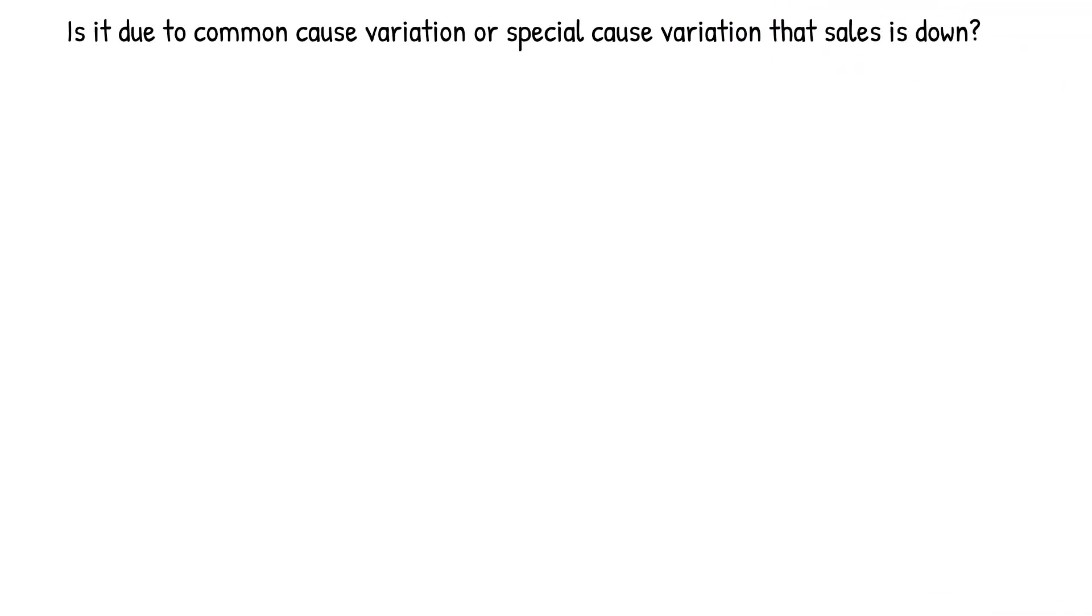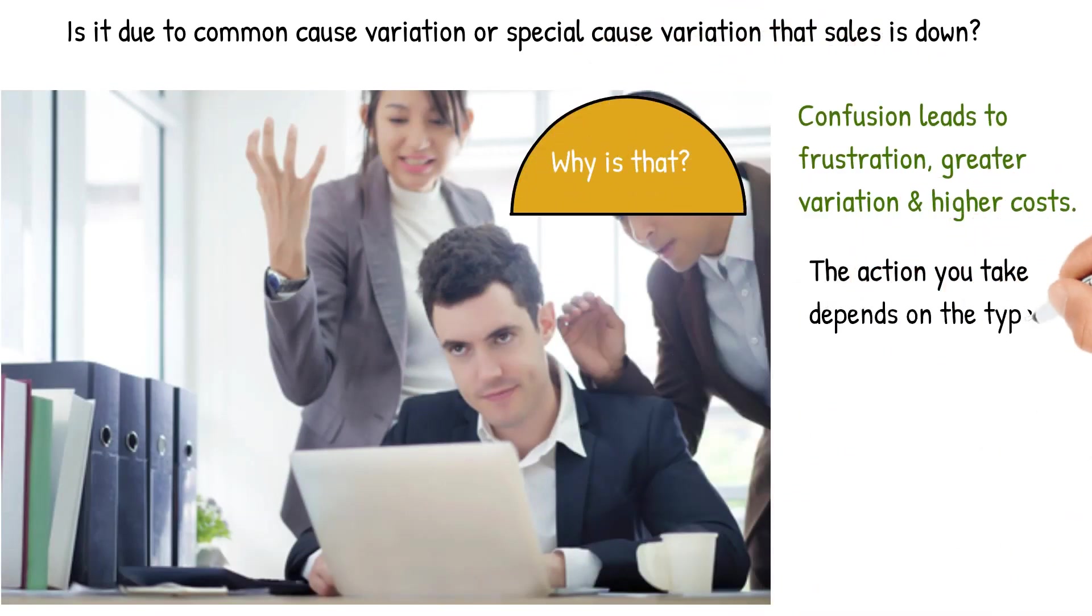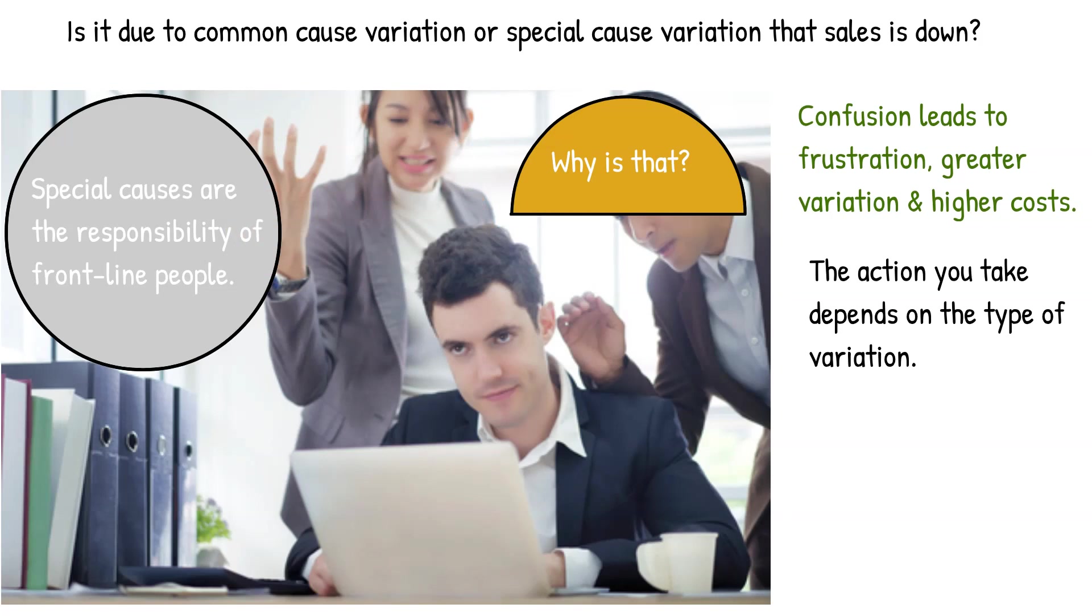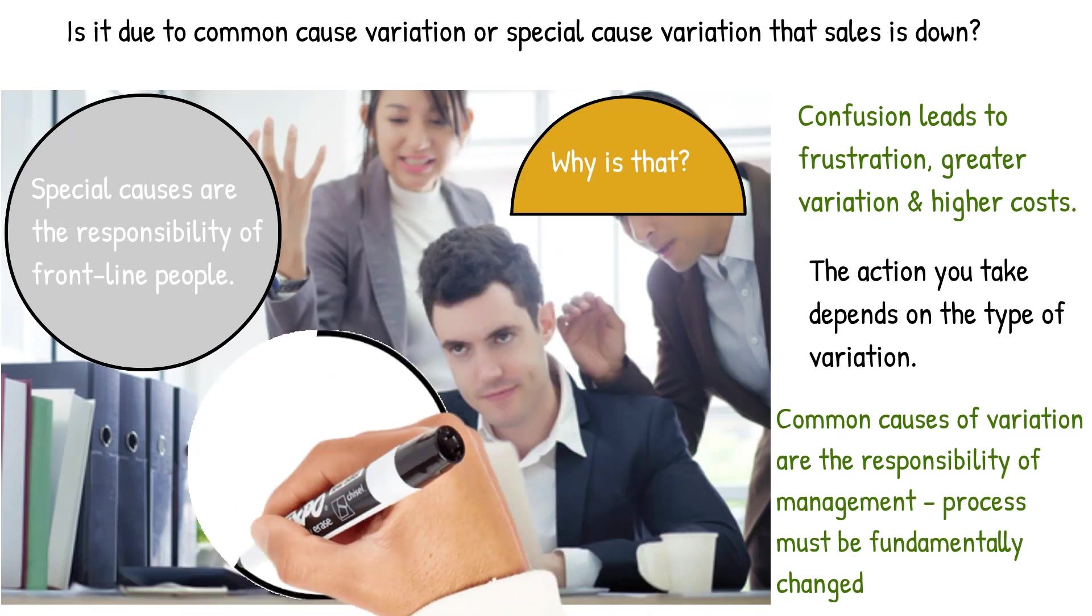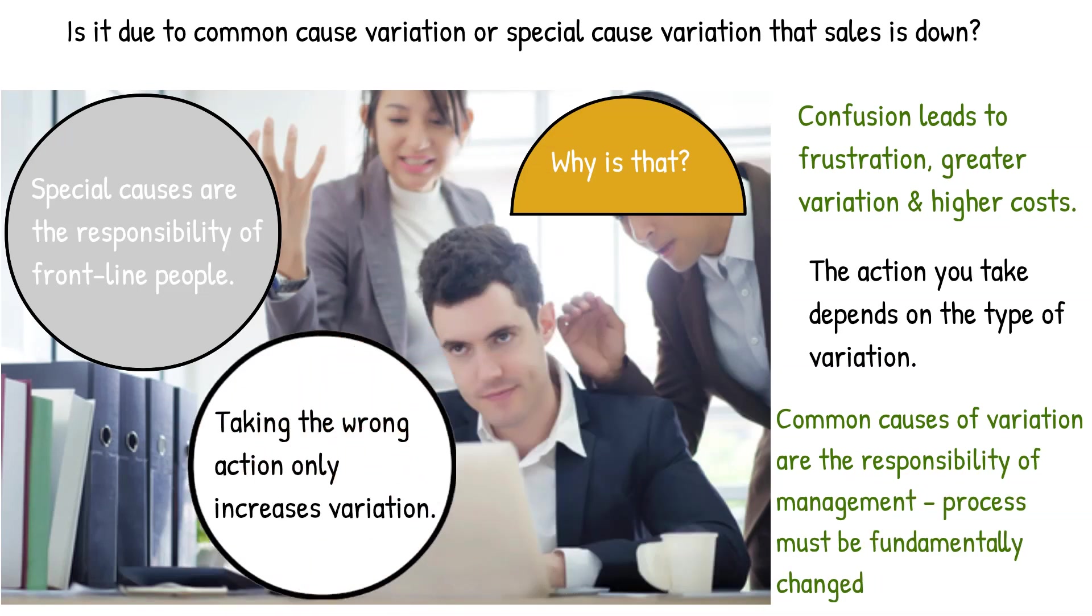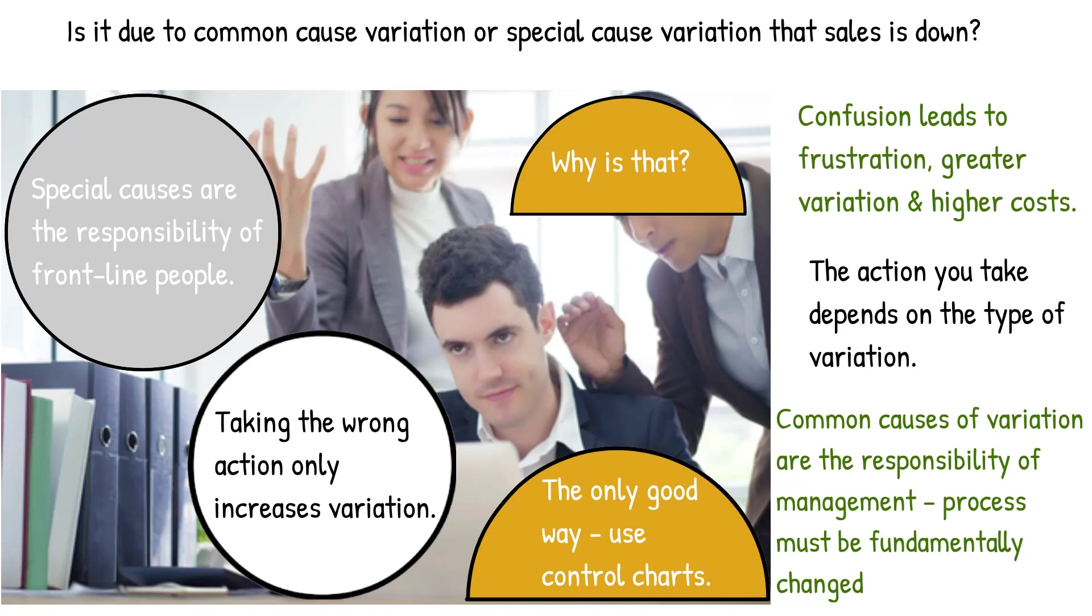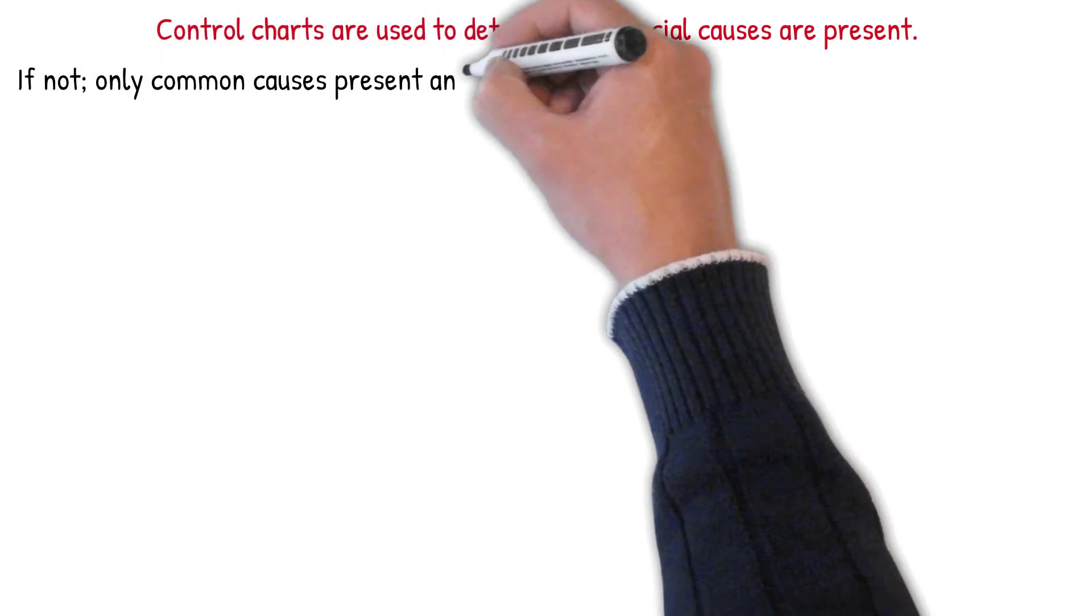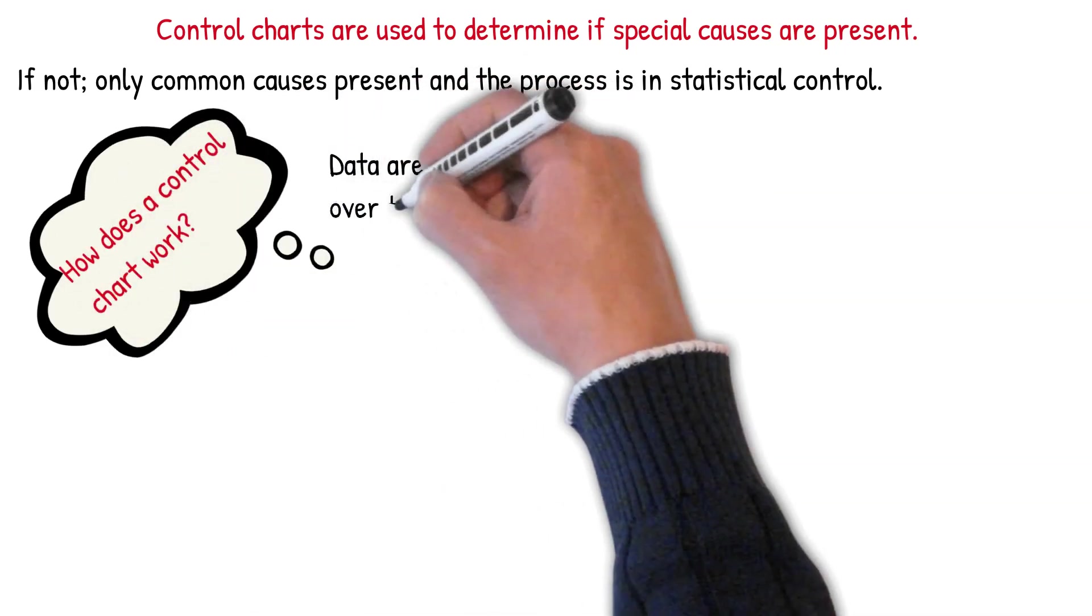So the question on sales from one month to the next, is it due to common causes or special causes of variation? And confusion leads to frustration, greater variation, and higher costs. Why is that? Because the action you take to improve a process depends on the type of variation you have. If you have special causes, it's a responsibility of frontline people to find. But if it's common cause of variation, it's responsibility of management. Because the process has to be fundamentally changed to reduce common causes. And taking the wrong action only increases variation. The only good way to define how to take action is through the use of control charts. Because one use of a control chart is to determine if special causes are present. If not, you just have common causes and the process is in statistical control.